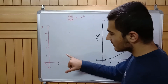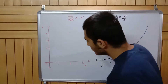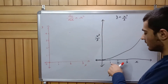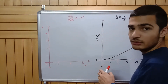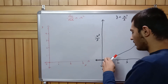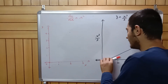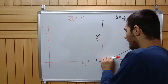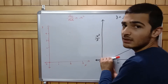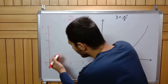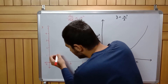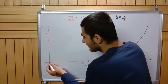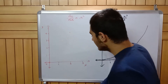I left out x equals one, so let me go back to that. At x equals one I draw a tangent, and the slope of this tangent is simply one squared, which is one. So I plot a point at one comma one.